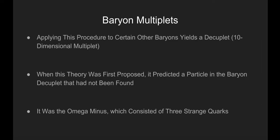If we apply this procedure to certain other baryons, we get a multiplet of 10 different baryons, called a decouplet.